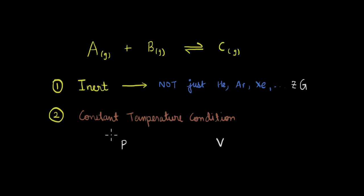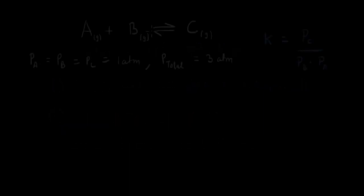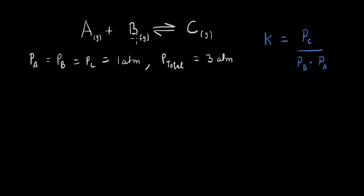To look at them individually, let's take two cases: one when we have the pressure constant, and second when the volume is constant. First, let's take the case where an inert gas is introduced at equilibrium keeping the pressure constant. So let's look at the constant pressure case.